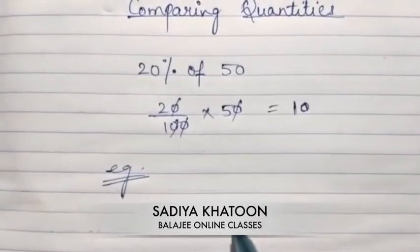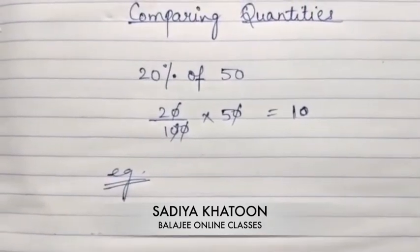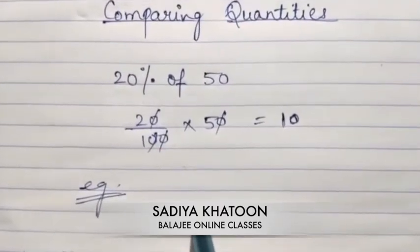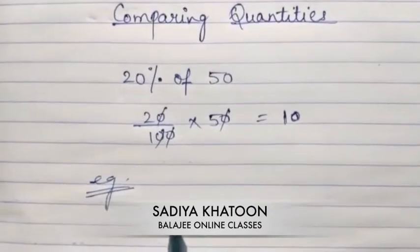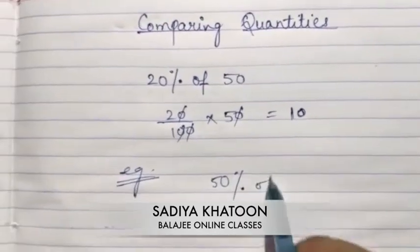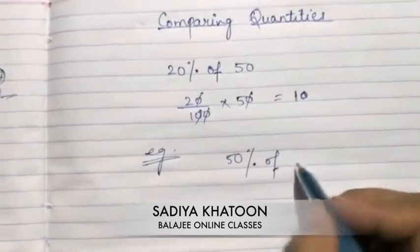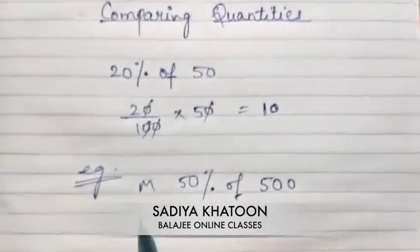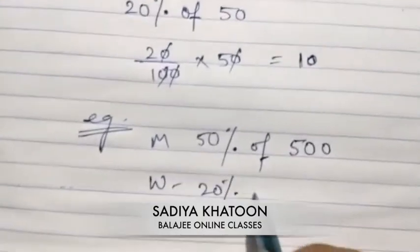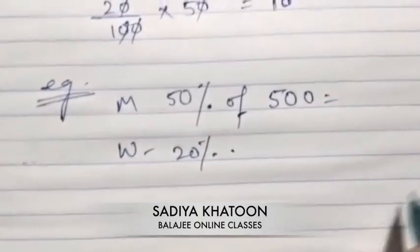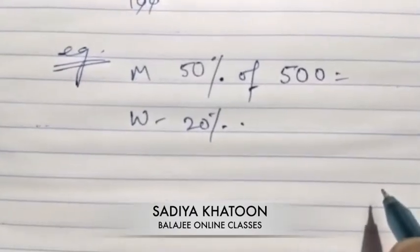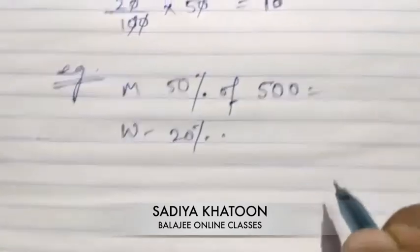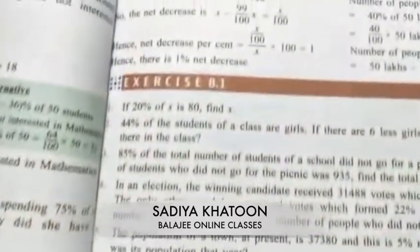When you have word problems — for example, if you are given that a certain percentage are men, a certain percentage are women, and you have to find the number of children — then whenever quantities are given in percentages, first calculate the numbers. Like if total people are 500, 50 percent are men, 20 percent are women, calculate each group. The first exercise is based entirely on this concept.